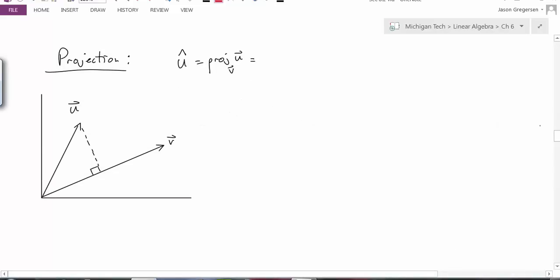So what is the projection of one vector onto another vector? Well, first we're going to use some notation. We have this u hat, and that's the notation we're going to use for the projection of u onto some other vector v. And this is another way to express that as the projection of u onto v.